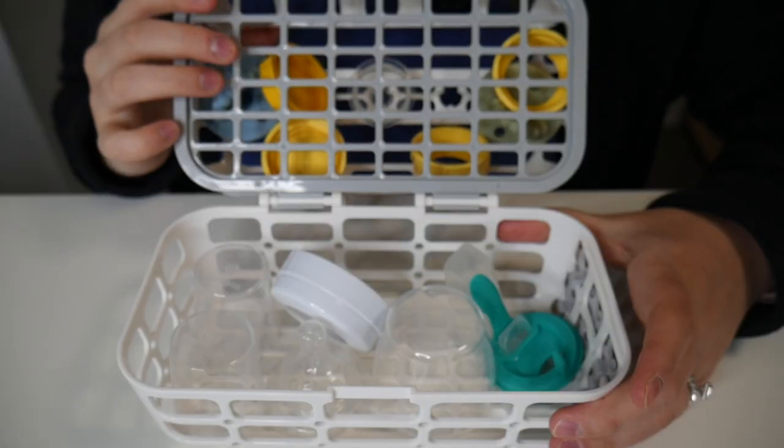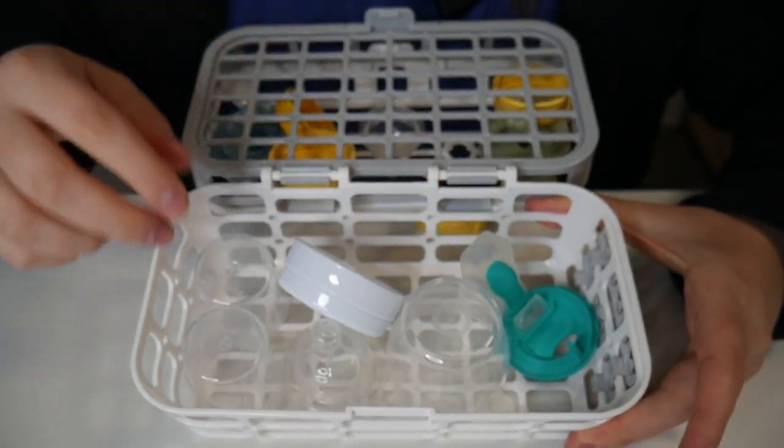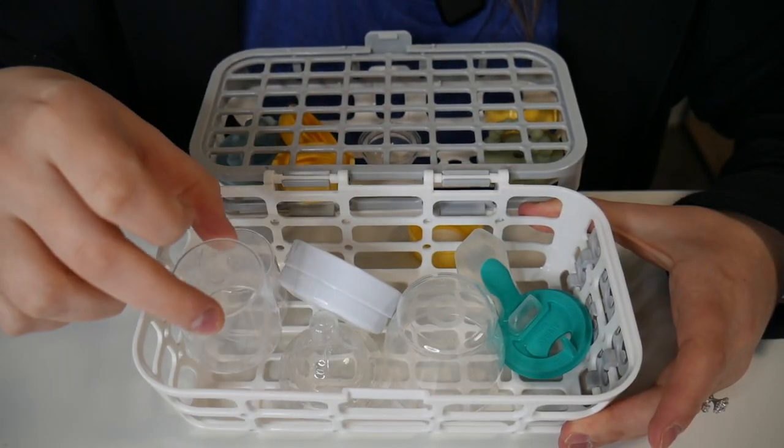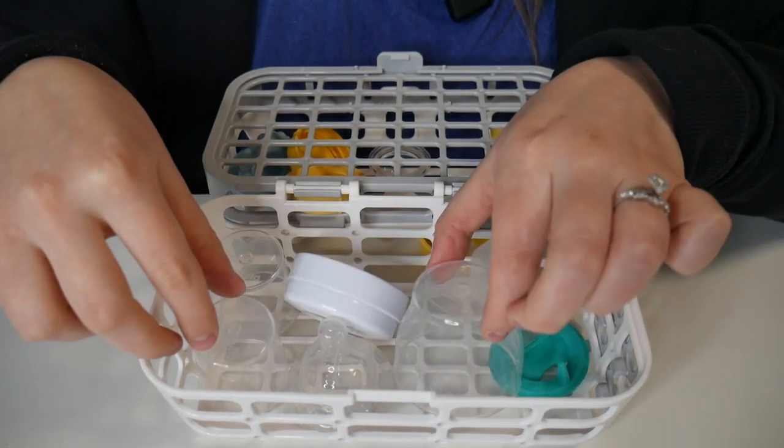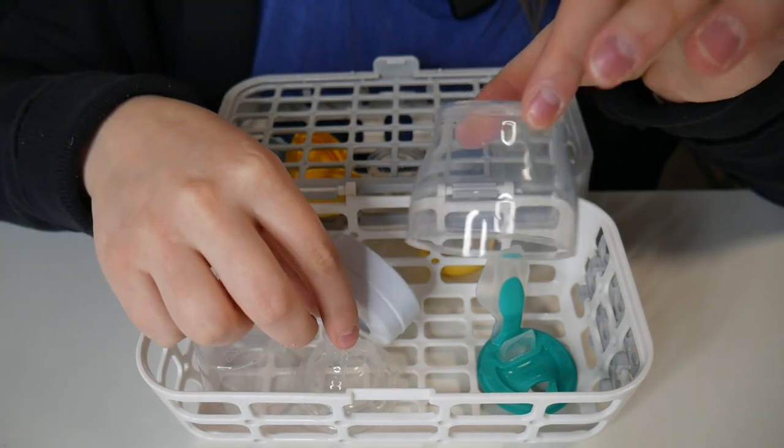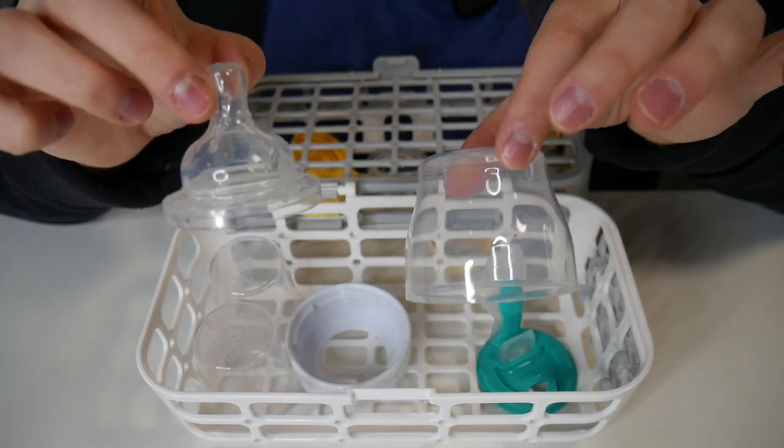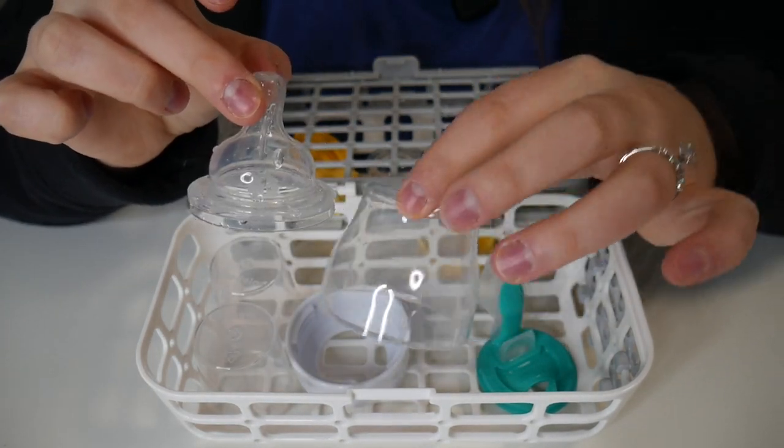On the bottom of the basket, I have a couple of caps for bottles. I want to show you how this can accommodate some larger bottles. I have larger pieces to a Philips Avent bottle, and you can see that this can easily fit inside here as well.